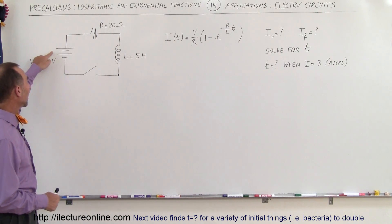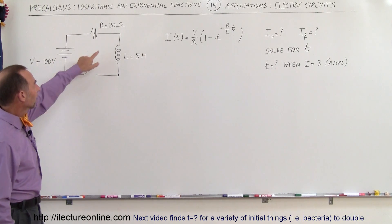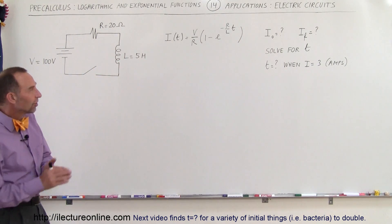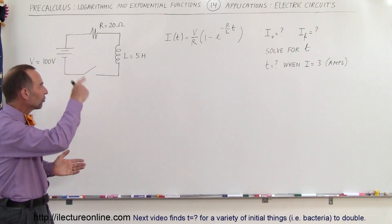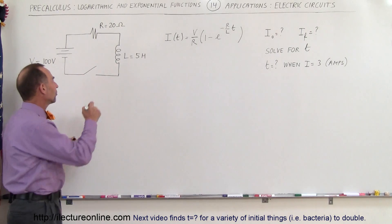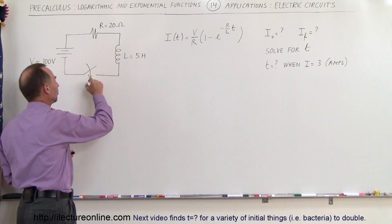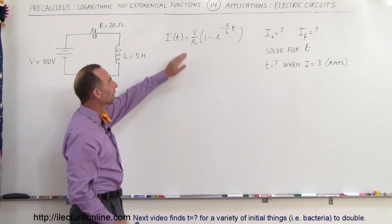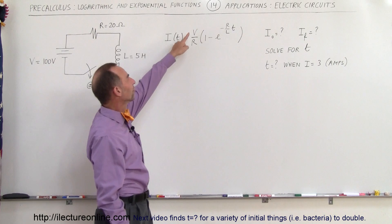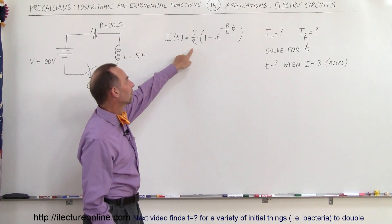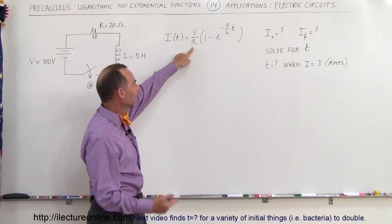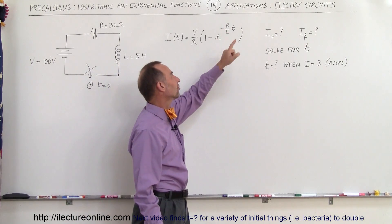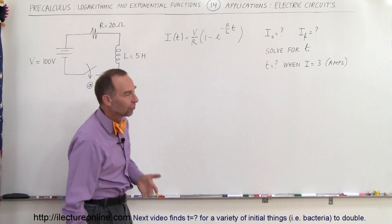We have a circuit that has a 100-volt battery, a resistor of 20 ohms, an inductor of 5 henrys. The equation that describes the current in the circuit — when we close the switch at time equals zero — is I = (V/R) times (1 minus E to the minus R over L times T), where V over R is Ohm's Law giving the final steady-state current, and R over L is the time constant in the circuit.